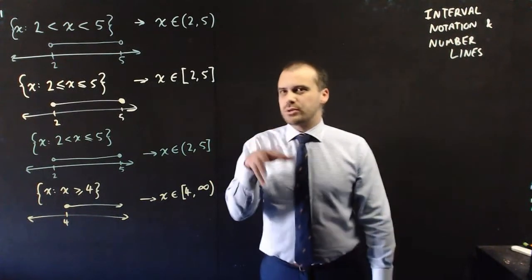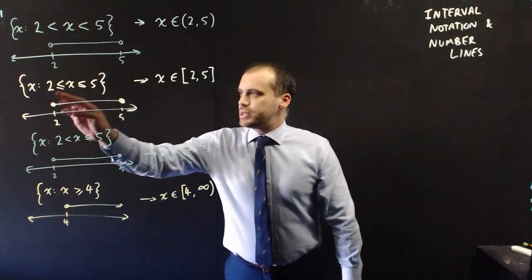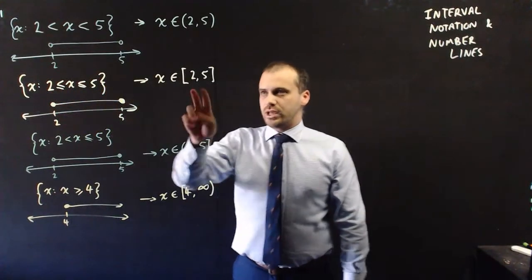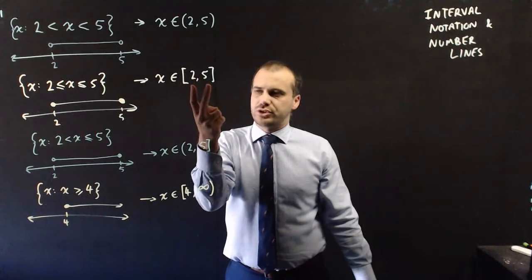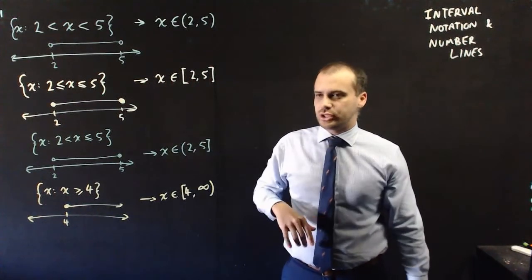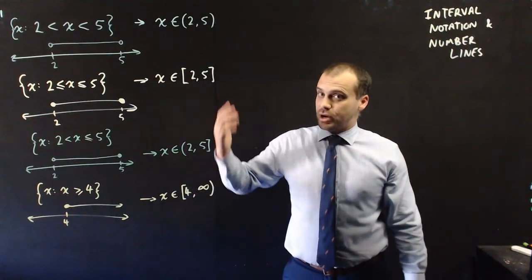But there isn't much more I need to say here. I just want to make sure that we understand we always put the smaller number on the left-hand side and the larger number on the right-hand side. We'd never write 5, 2. We always write 2, 5 smaller and then larger. And that's about it. Practice, practice.